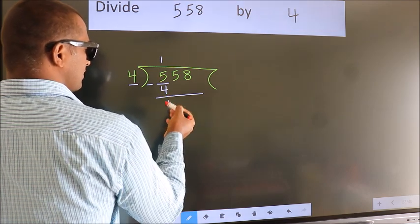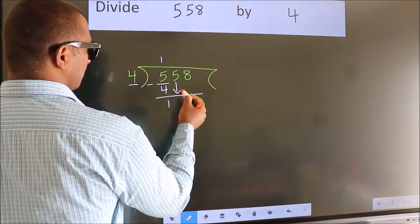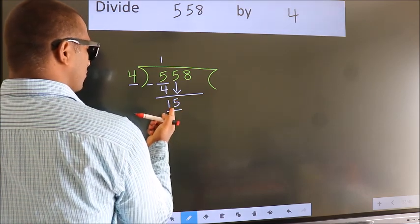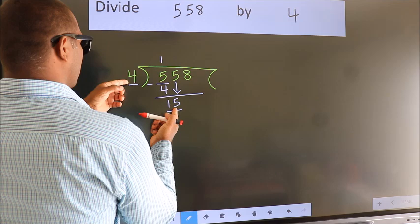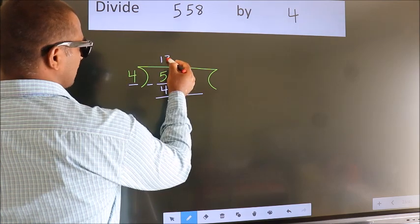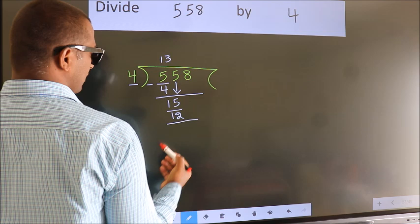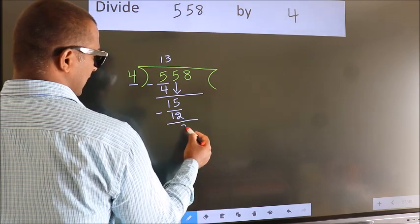After this, bring down the beside number. So 5 down, making 15. A number close to 15 in the 4 table is 4 threes, 12. Now we subtract. We get 3.